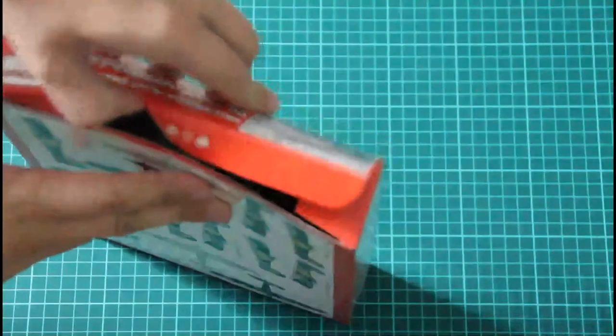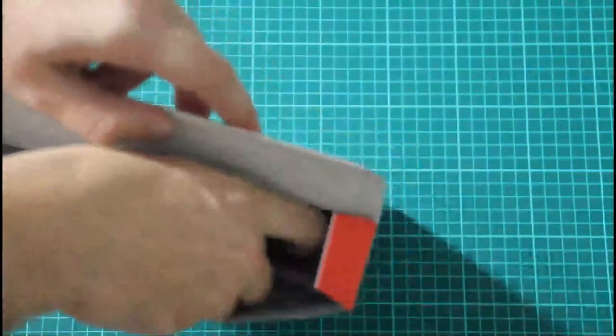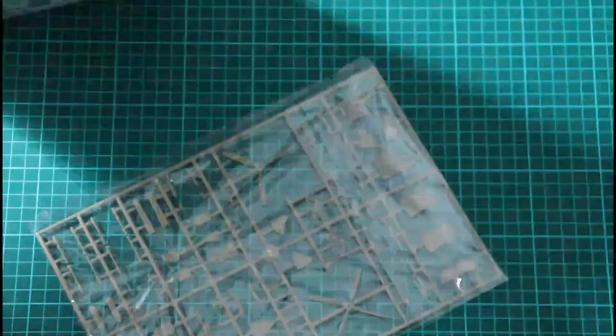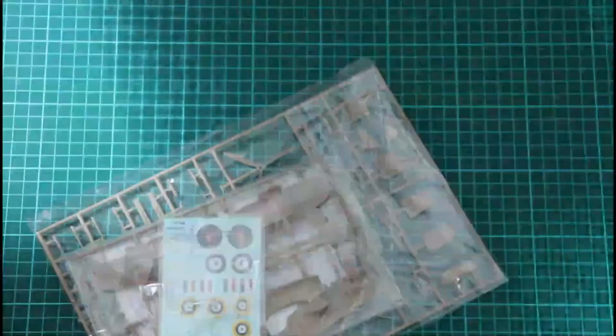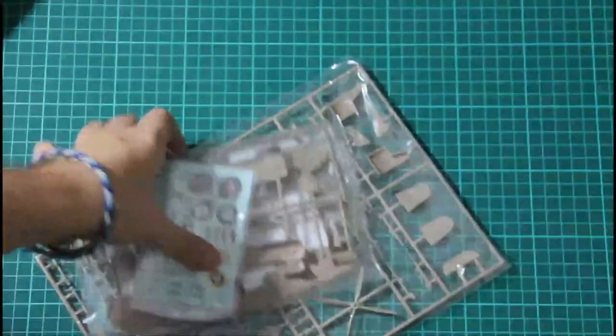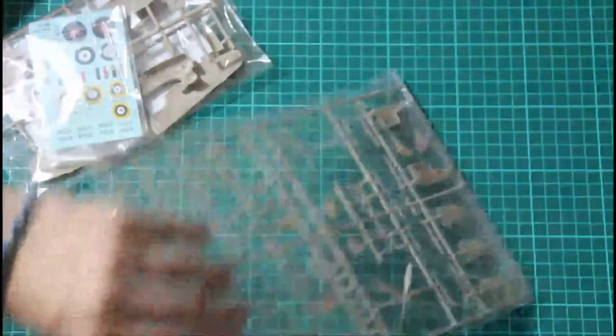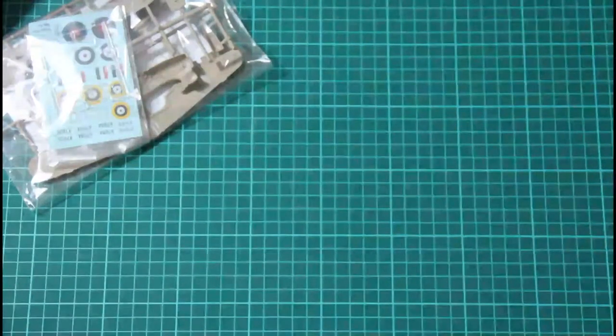So the kit is packed in the traditional side opening box. Let's open it. And what we find inside is a sprue and another sprue. That's all I think. So let's check them one by one and I think we will understand if this kit is interesting for us or not.